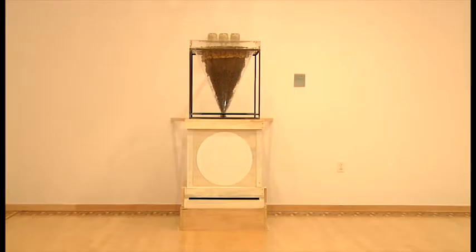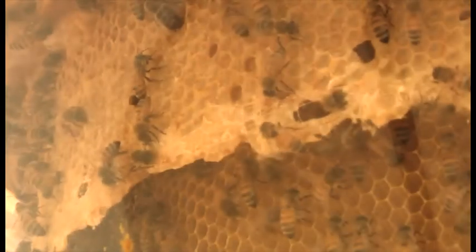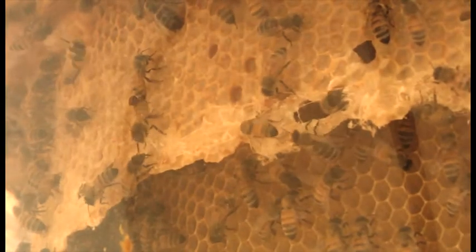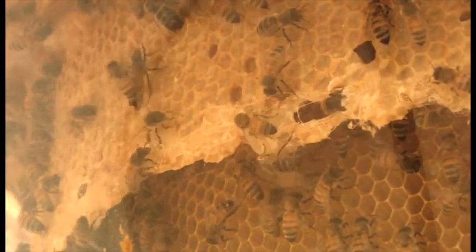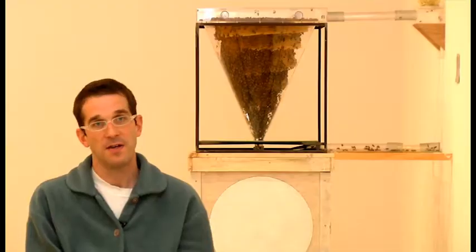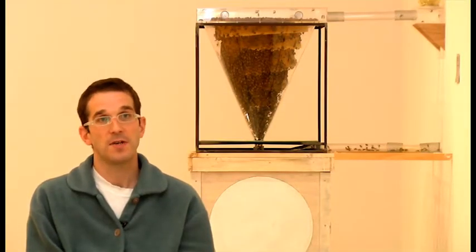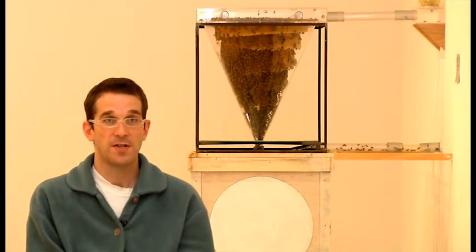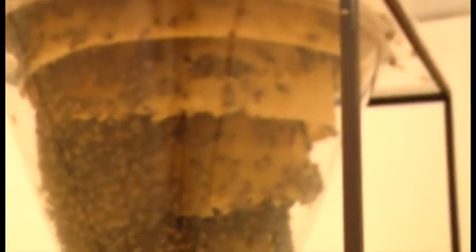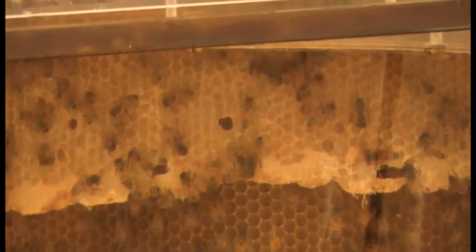What Hilary does is collaborate with a beekeeper and together they design a beehive. They are clustering and combing out this structure that Hilary has placed inside the conical structure of the plexiglass, and so over a series of months those bees will gradually begin to form the sculptural work itself.